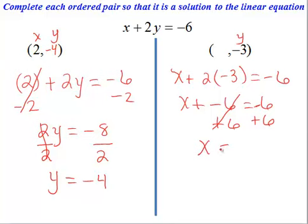We now have x equal to 0 since negative 6 plus 6 is 0. So our value in this case for x is 0 and y is negative 3. So we have now completed each ordered pair so that each is a solution to the linear equation x plus 2y equals negative 6.